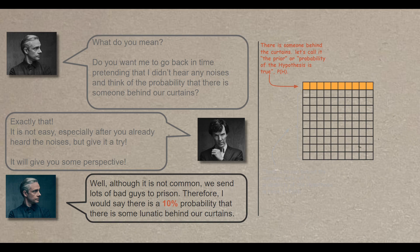In Bayesian statistics, we call this the prior, also known as the probability of the hypothesis being true. By the way, if the word hypothesis intimidates you, just think of it as the word theory for now. So the probability that the theory is true that there is someone behind the curtains is 10% regardless of any evidence.